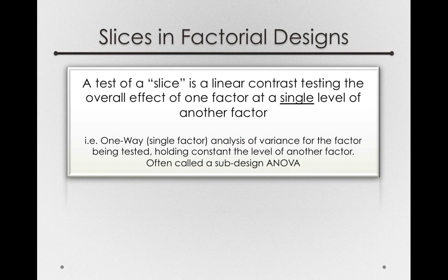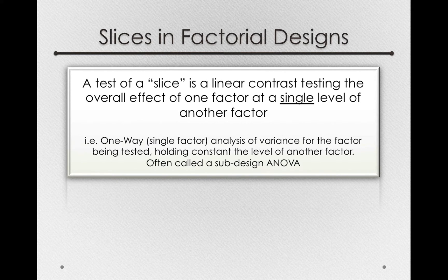Let's start with the definition. A test of a slice is a linear contrast testing the overall effect of one factor at a single level of another factor. This is analogous to a one-way, single-factor analysis of variance for the factor being tested, holding constant the level of another factor. We often call this a sub-design ANOVA — it's almost like a one-way ANOVA looking at one factor at just one level of the other factor, such as the time-of-day effect at just Gilman Drive.